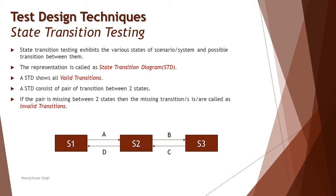The missing transitions — those not displayed in the diagram — are what we call invalid test cases. For example, a test written to jump from S1 to S3 or S3 to S1 would be an invalid test case. Just like other techniques, state transition testing helps identify both valid and invalid test cases. It is simple to identify missing transitions between two states, making it easy to derive the negative set of test cases directly from the diagram.